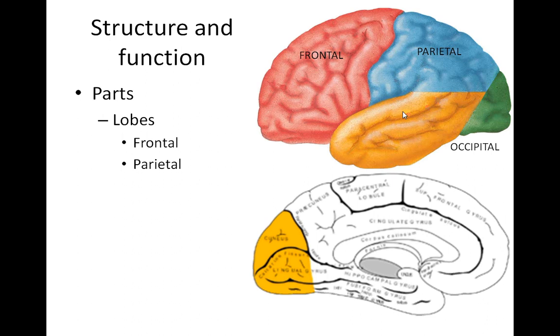The next lobe of the brain is the temporal lobe, and the temporal lobe is basically the part of the brain which lies below the lateral sulcus.